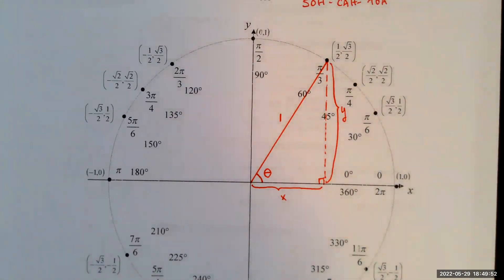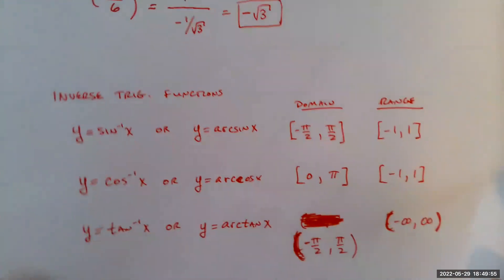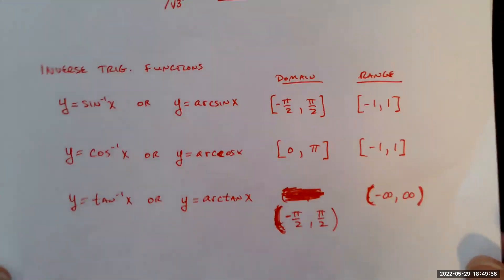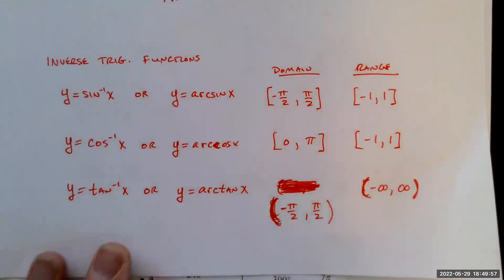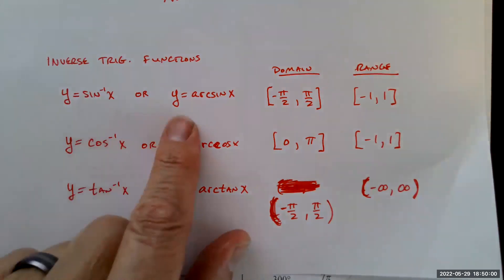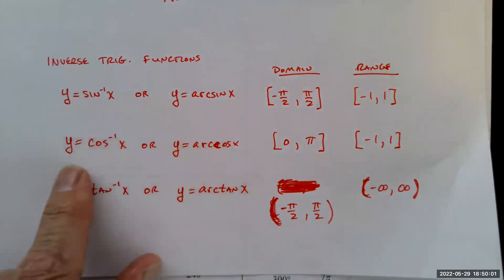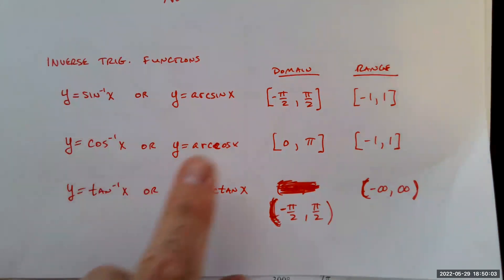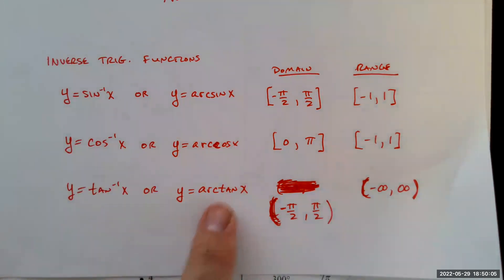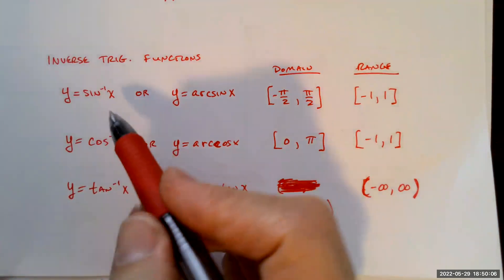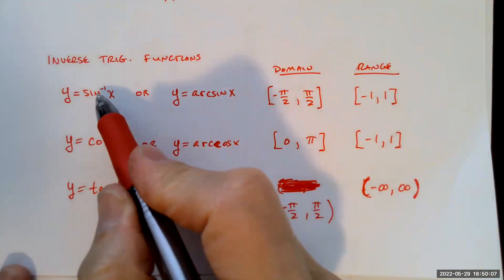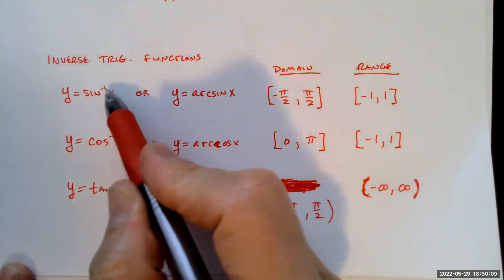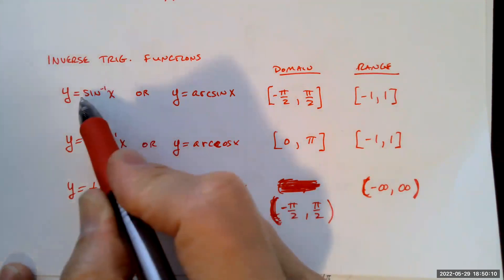You should also be familiar with the inverse trig functions. The three most important are inverse sine (arcsine), inverse cosine (arccosine), and inverse tangent (arctangent). The notation sin⁻¹(x) looks like an exponent but is not — it is not sine of x to the negative 1 power.